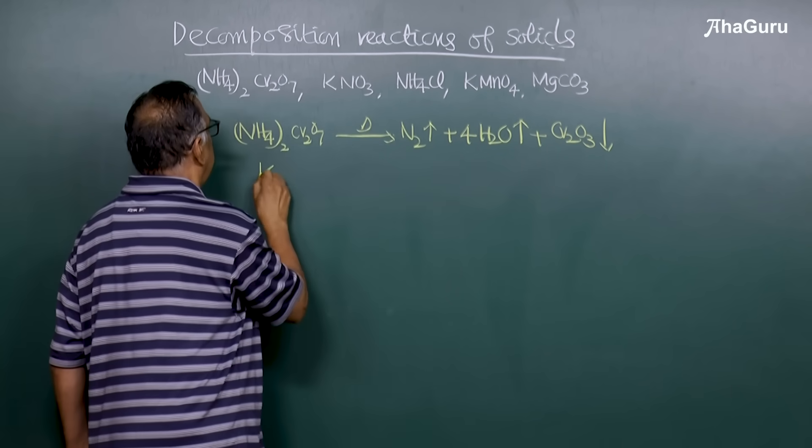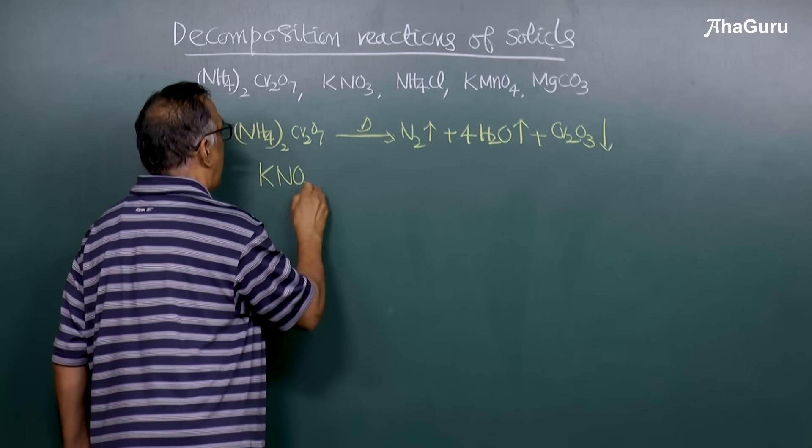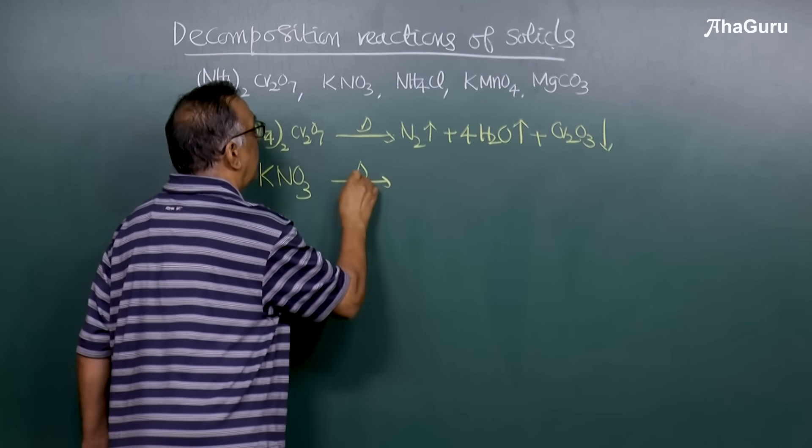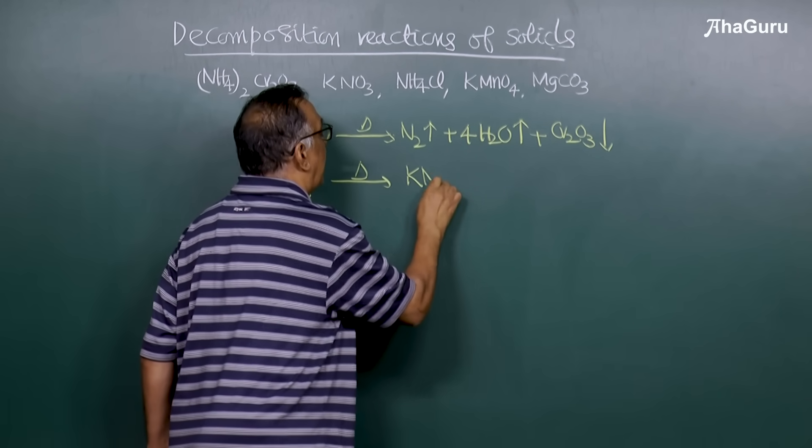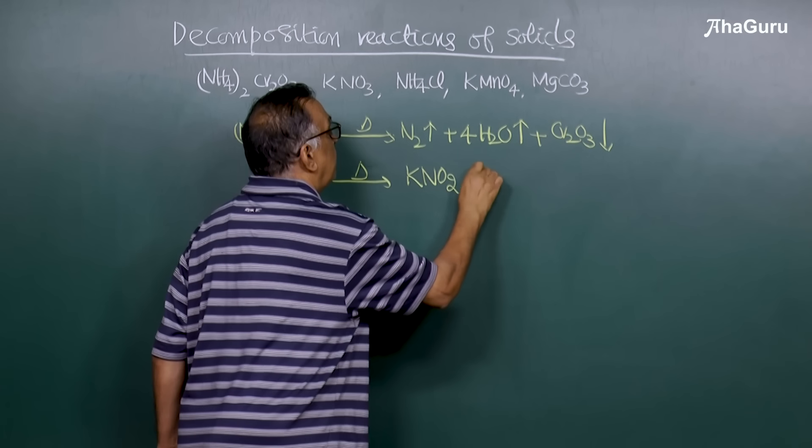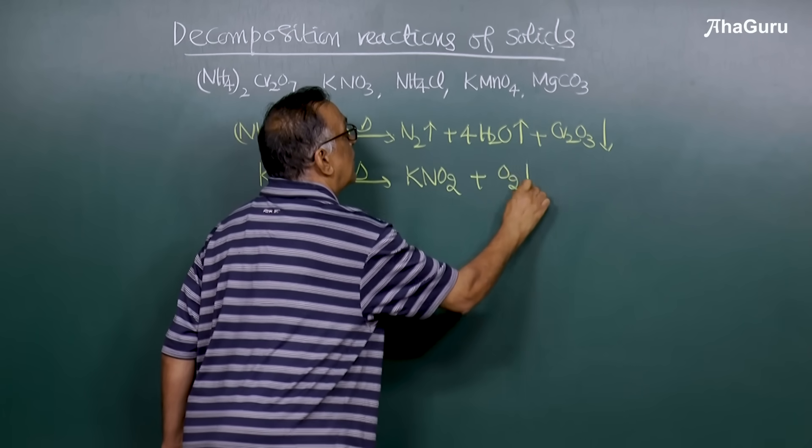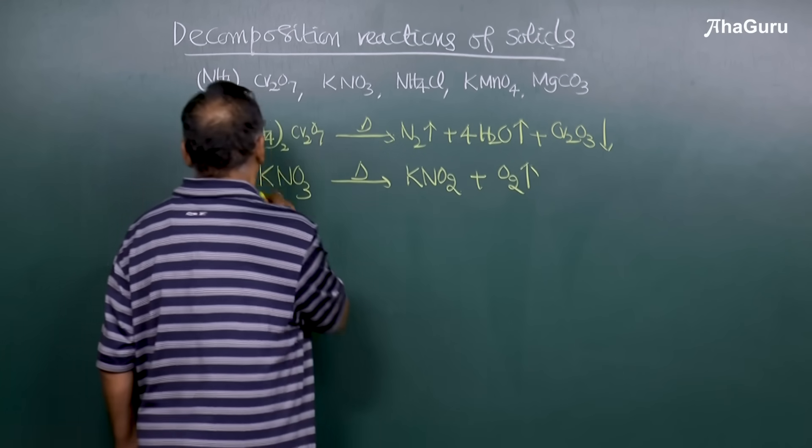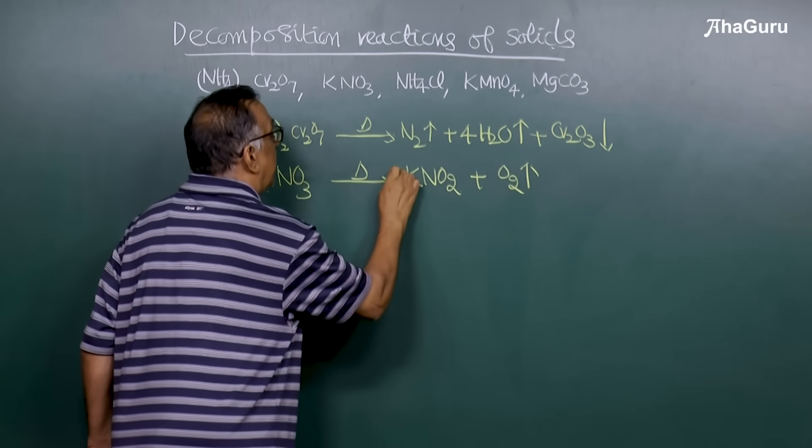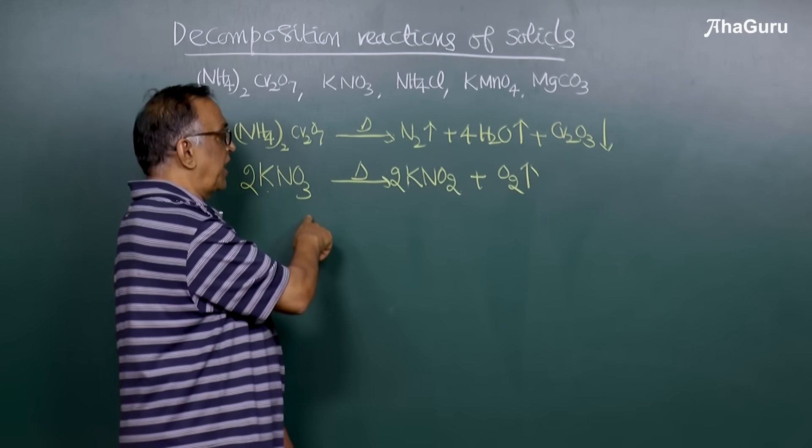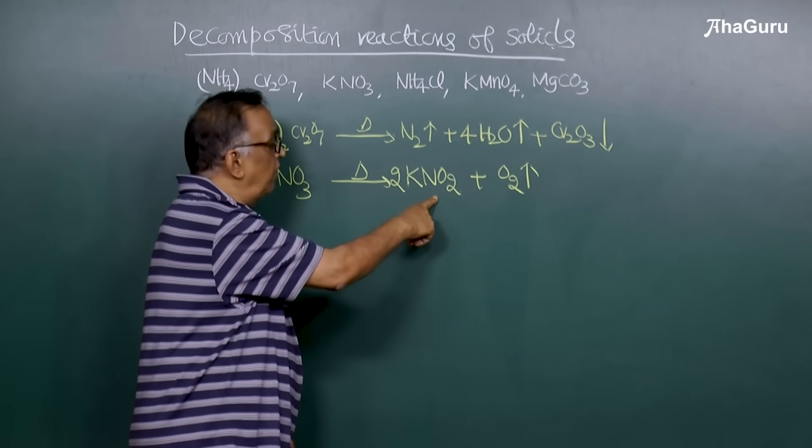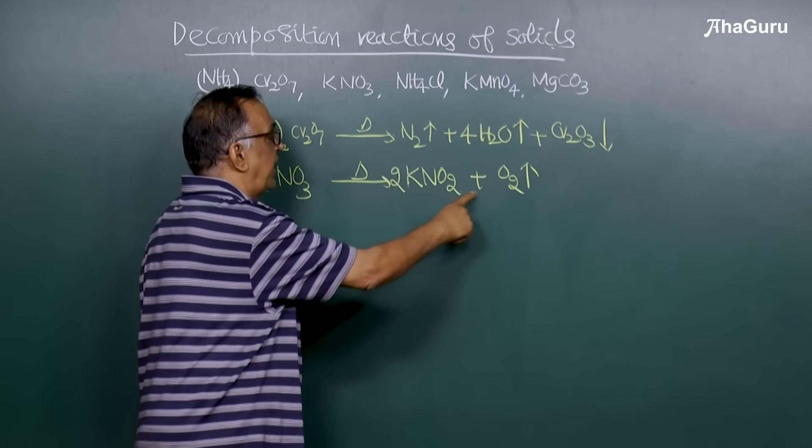If I take potassium nitrate solid, on heating it forms potassium nitrite solid plus oxygen gas. The reaction is 2 moles of potassium nitrate on heating forms 2 moles of potassium nitrite and oxygen.